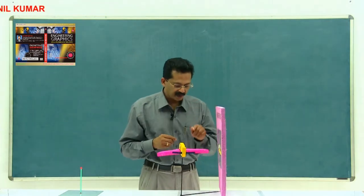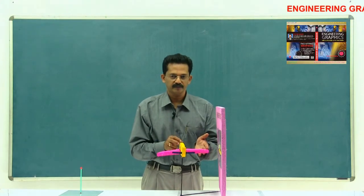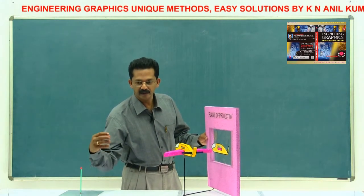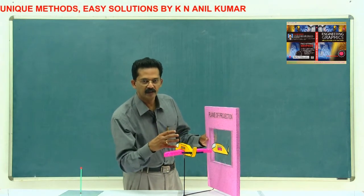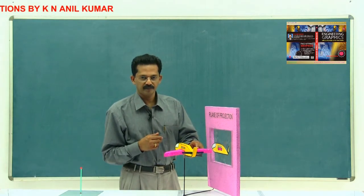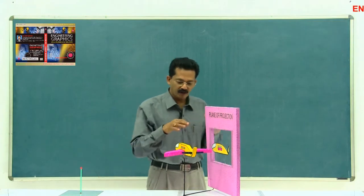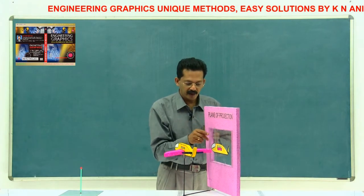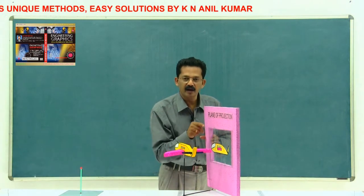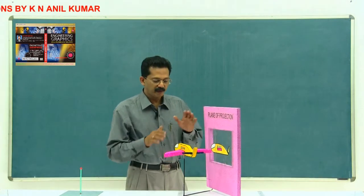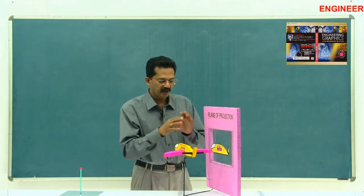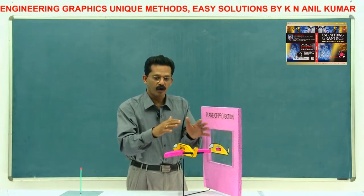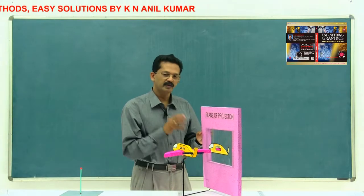Consider a particle on the side of the aircraft. If somebody is standing there and looking in that direction, they won't be able to see this particle. But when you project all these particles, you are actually projecting that particle also towards this plane, meaning you are getting the 2D shape of that particle here on this plane. You have to project all these particles to get the 2D shape of all of them on this plane, and finally you will get the projection of the entire object on this plane. That is the concept of projection.